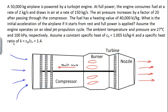In a turbojet engine there are effectively five points: the inlet to the compressor (point 1), the exit of the compressor entering the burner section (point 2), the exit of the burner entering the turbine (point 3), the exit of the turbine entering the nozzle (point 4), and finally the exit of the nozzle (point 5).